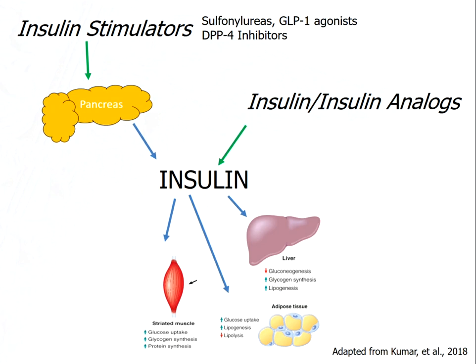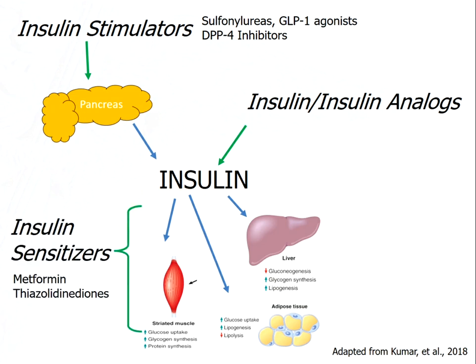Sulfonylureas were one of the early ones, along with GLP-1 agonists and DPP-4 inhibitors. Another strategy would be to increase the sensitivity of the peripheral tissues to insulin — metformin is the classic example of that. And then we have another strategy that has its primary action at the kidneys. We'll talk about each of these drugs in turn.